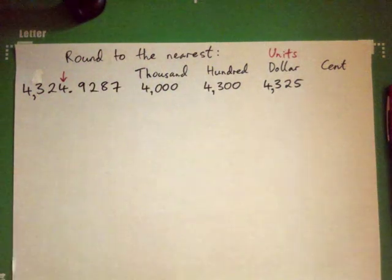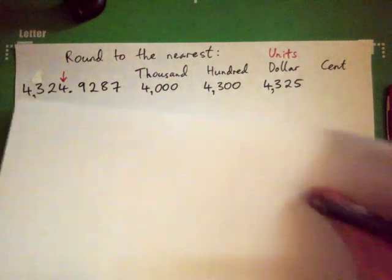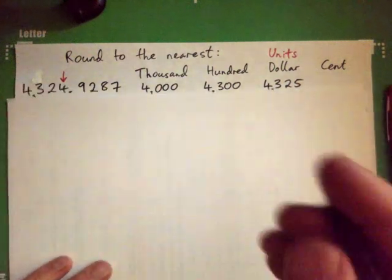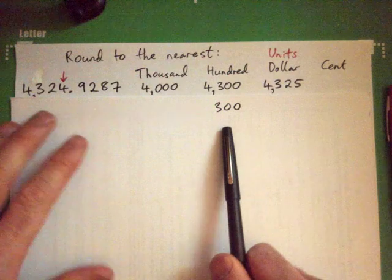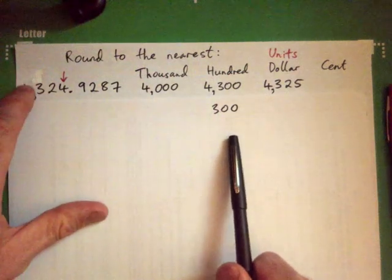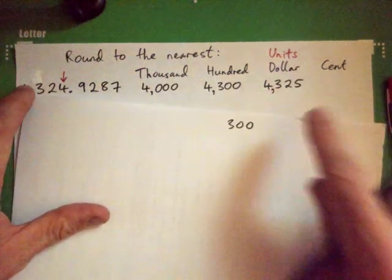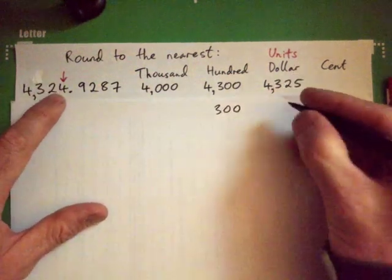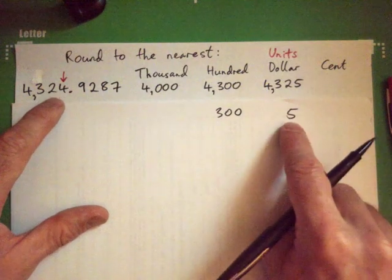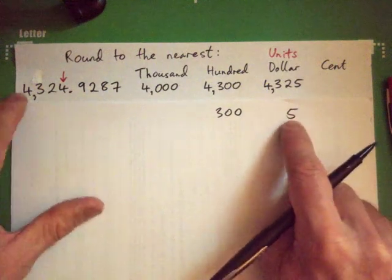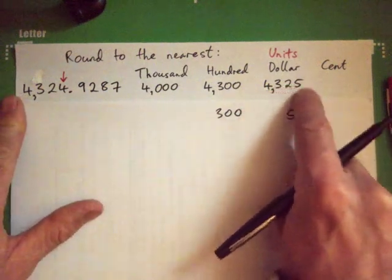So a common mistake, everybody — here's a common mistake. Students might say okay, that's $300 — but 300 is way off of that, so definitely not that. Or they might say the answer is $5 — well, that's way off. So no, it's 4,325.